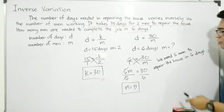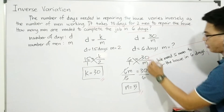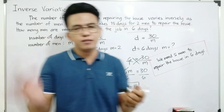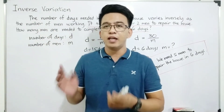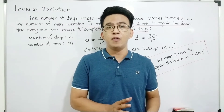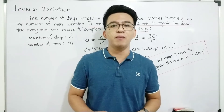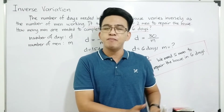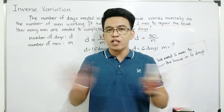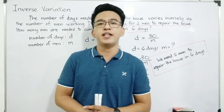This is the answer. You can express it in a complete sentence. As you can see, this one is definitely an example of inverse variation. Remember, when there are many men working, we can lessen the number of days needed to accomplish a job. But if there are fewer men, we consume more time to finish a job. Therefore, this is definitely an example of inverse variation.